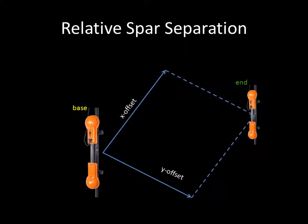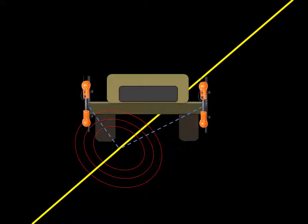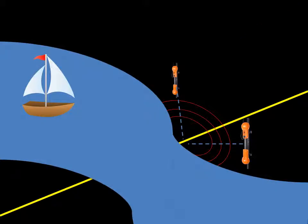In relative mode, the location of the end spar will be expressed in XYZ coordinates relative to the position of the base spar. This is mainly useful when making measurements using spars mounted in a fixed formation on a vehicle or boat, or to make a single measurement on easy terrain without moving the spars.